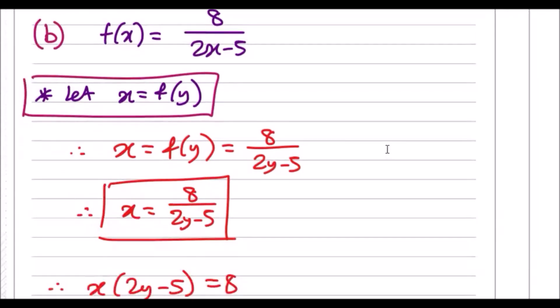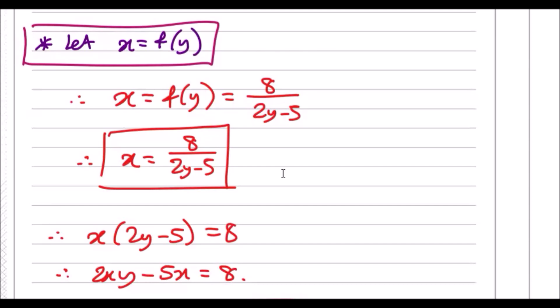And then therefore just copy it down. So this means x equals function of y. So replace this function here of y. So you've got 8 over 2y minus 5, and then we have therefore x equals 8 over 2y minus 5.